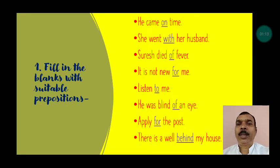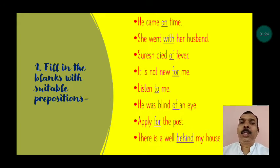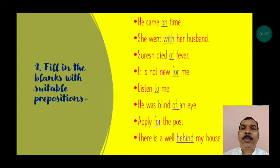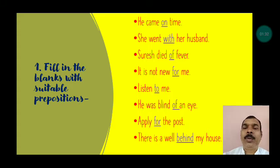It is not new — me. Answer: for. It is not new for me. Listen — me. Answer: to. Listen to me. He was blind — an eye. Answer: of. He was blind of an eye.